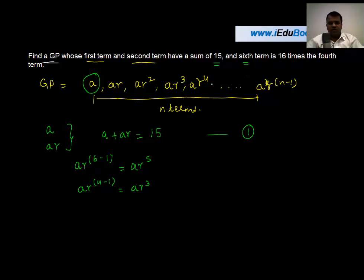Now what you also know is that the sixth term, which is ar⁵, is 16 times the fourth term, which is ar³. Or in other words, if we just take this particular ar³ to the other side...